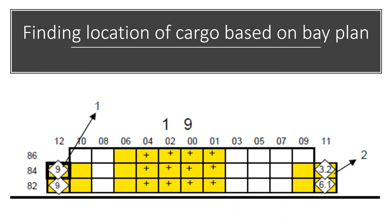The location of cargo is identified in the order of bay, row, and tier number. The bay plan also gives the general description of cargo — whether it is 40 feet or 20 feet, and the content, whether hazardous, dry, or reefer. You can see dangerous goods marked as class 9 or class 3.2, 6.1. This is shown in a transverse view of the storage plan, where the rows and tiers are visible.